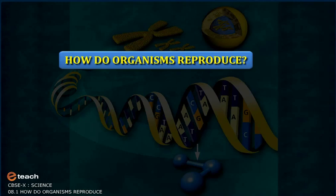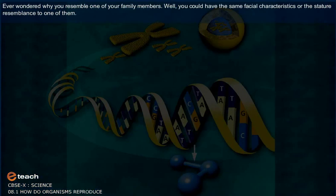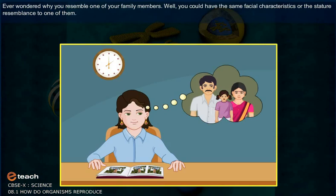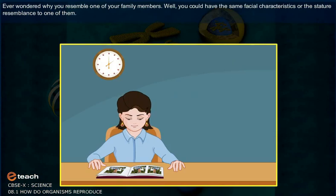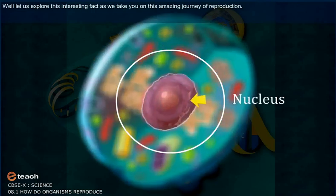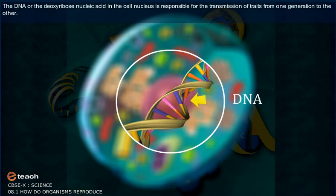How do organisms reproduce? Ever wondered why you resemble one of your family members? You could have the same facial characteristics or stature resemblance to one of them. Let us explore this interesting fact as we take you on this amazing journey of reproduction. The DNA, or deoxyribonucleic acid, in the cell nucleus is responsible for the transmission of traits from one generation to the other.